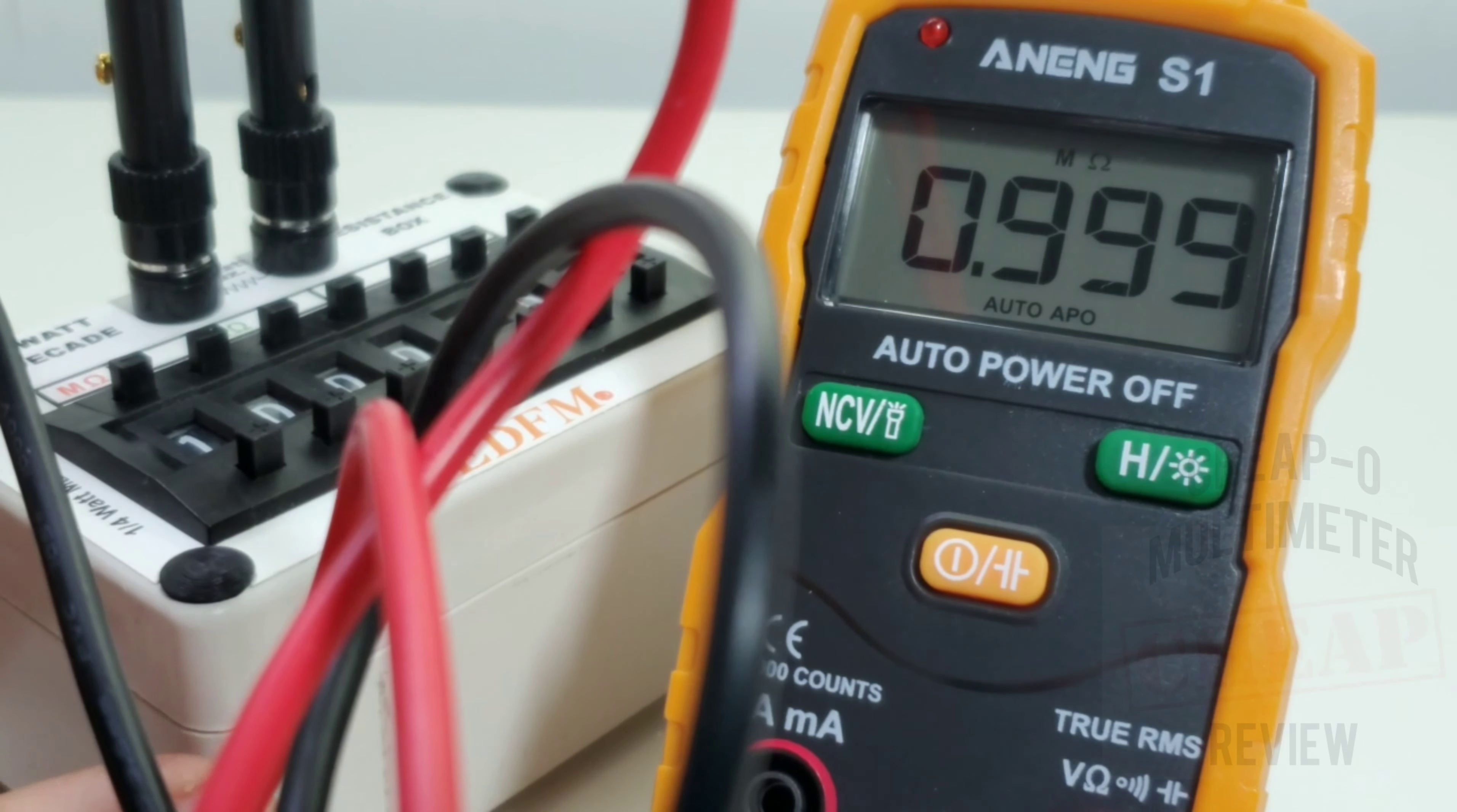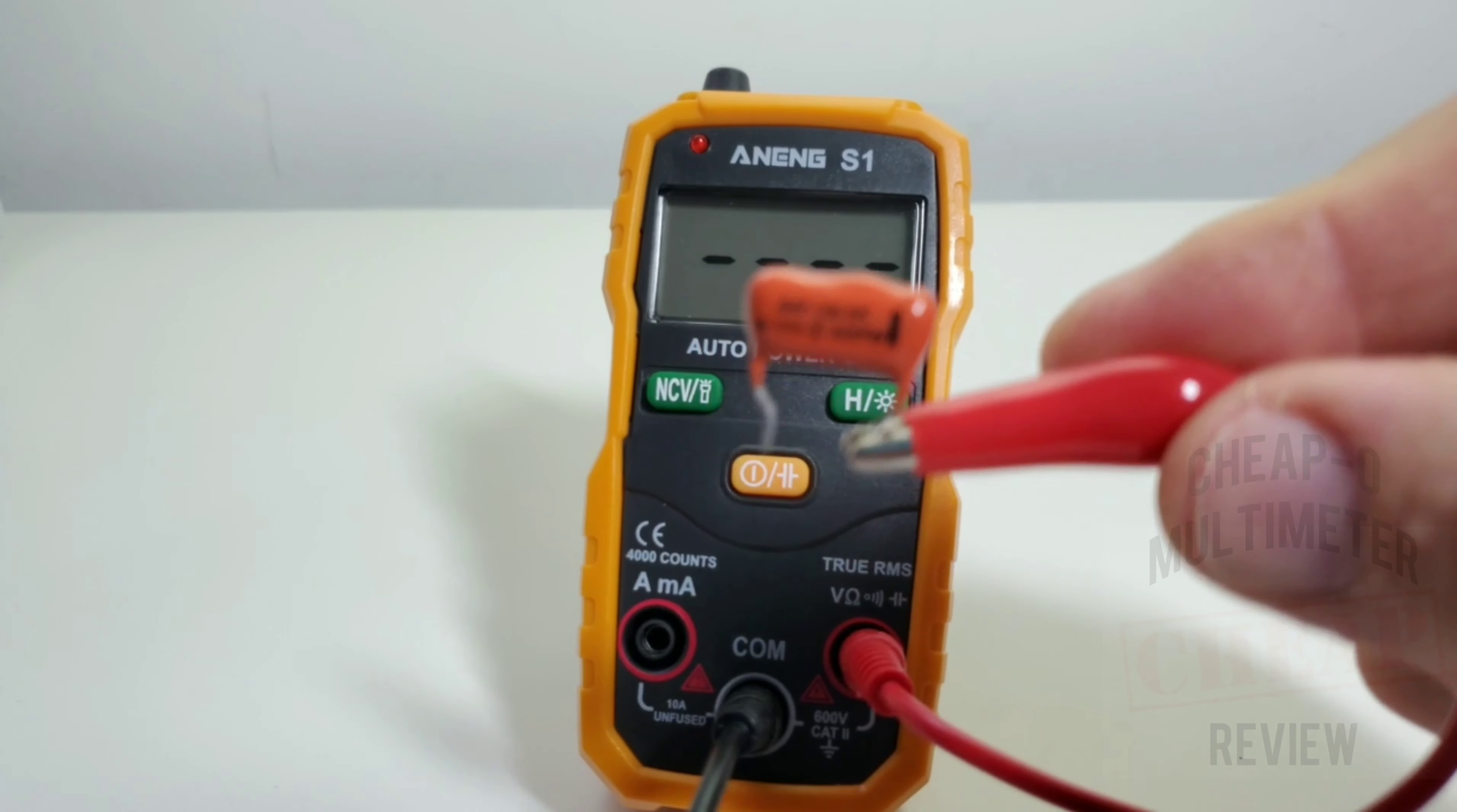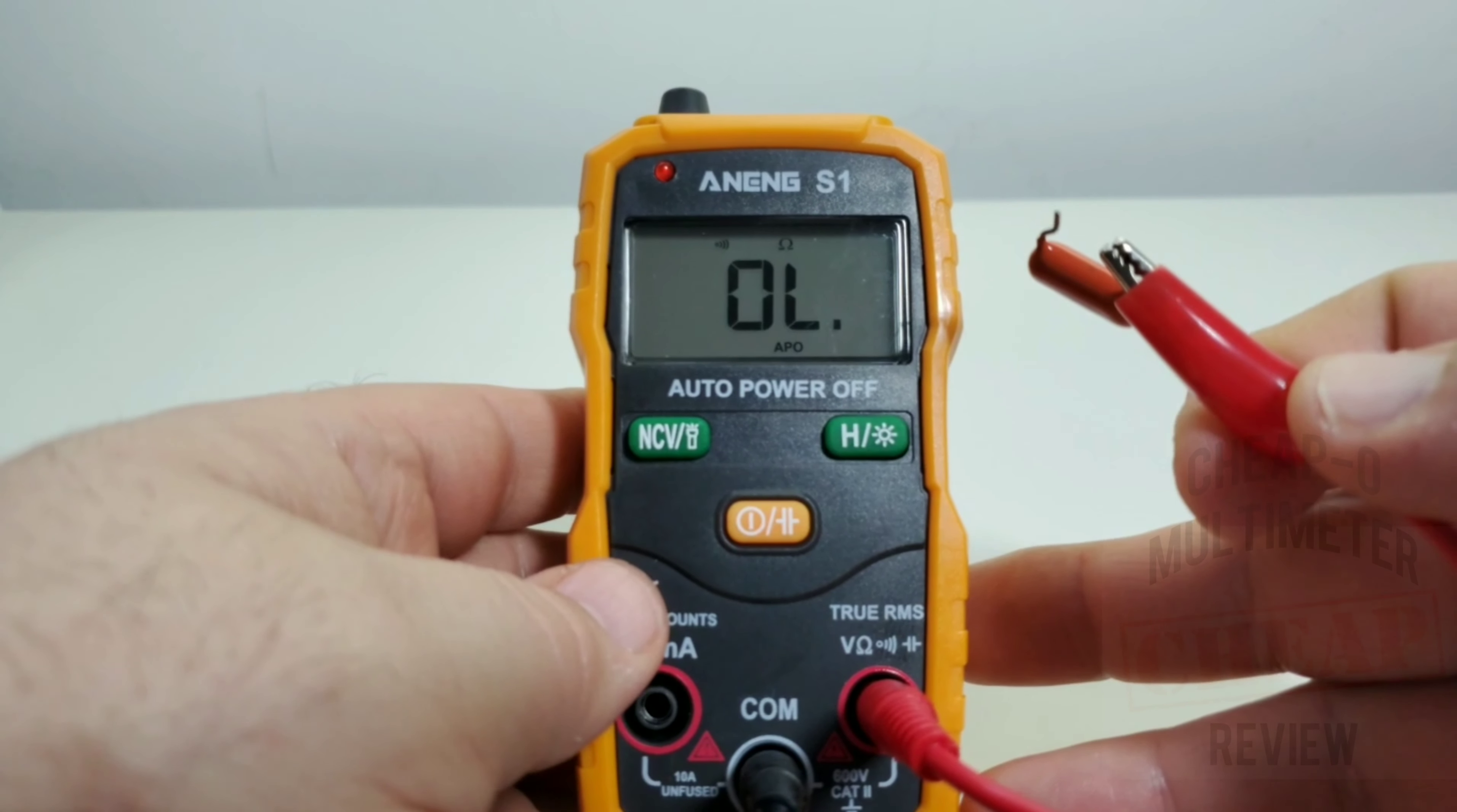Next up is capacitance. Now this has a rating of 20 nanofarad to 2000 microfarad, so can we say... anyway, we're going to start off with a 47 nanofarad, so it is definitely in range. Now we have to put it into capacitance mode as you can see, we have the capacitance symbol here, we press it once.